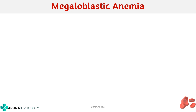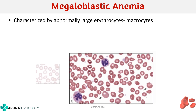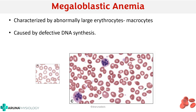Megaloblastic anemia, as the name suggests, is characterized by abnormally large erythrocytes — in other words, macrocytes. As shown in this image, you can see bigger cells compared to the others. That is why they are called macrocytes. Now why do we have macrocytes? Because it is caused by defective DNA synthesis.